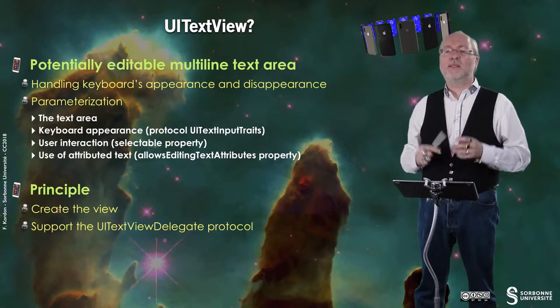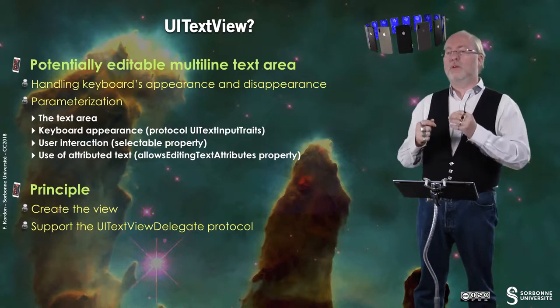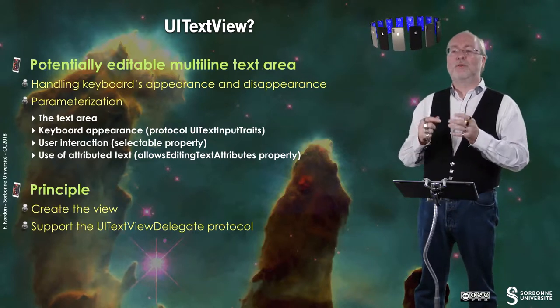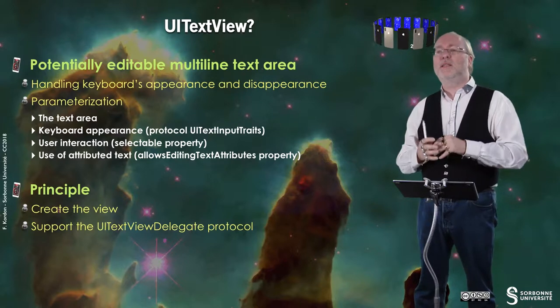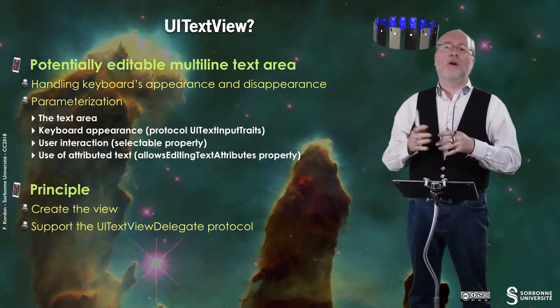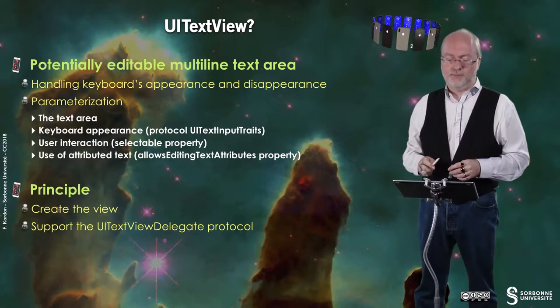AttributedText is text with a change of characteristics: bold text, italic text, color, etc.